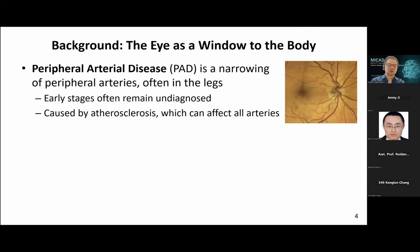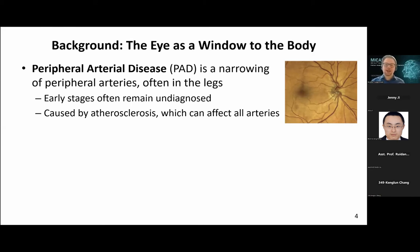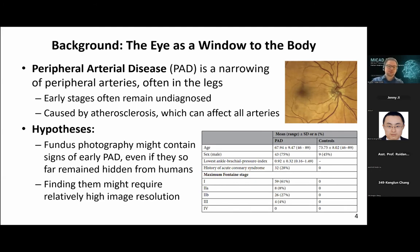With collaborators at the local eye hospital, we were looking into peripheral arterial disease — a narrowing of peripheral arteries that often affects the legs. There is a high diagnostic demand because currently the early stages often remain undiagnosed. We believe we can use the eye not just as the window into your soul, but as a window into what happens within the rest of your body, because the underlying condition of PAD is atherosclerosis, which can affect all arteries including those in the eye. Our hypothesis was that fundus photographs might reveal early signs of PAD even if no human looking at those images would be able to detect this.